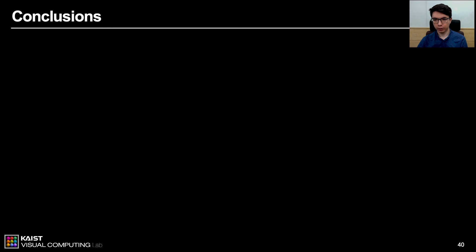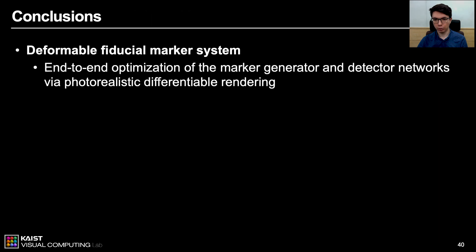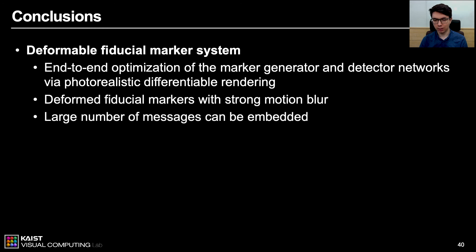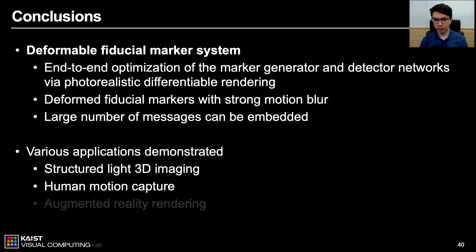In conclusion, we have developed a novel deformable fiducial marker method through an end-to-end optimization of the marker generator and detector network via photorealistic differentiable rendering. Our method outperforms state-of-the-art detection capabilities, with both synthetic and real-world image data. In particular, our method presents strength in detecting deformed fiducial markers and markers with strong motion blur. Also, the number of messages that can be embedded in a marker is significantly larger than existing methods. It allows us to detect a large number of multiple markers simultaneously in real-time, enabling applications such as structured light 3D imaging and human motion capture. We anticipate that our method can provide a more robust performance of augmented reality rendering with various real-world imaging scenarios. Thank you for listening.